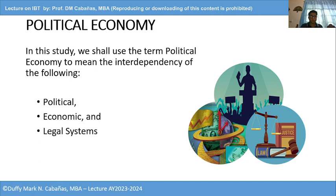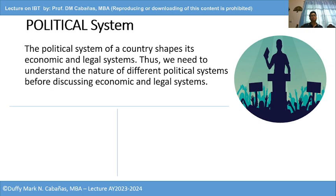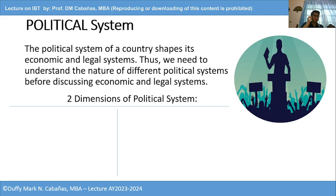They are all related, interdependent, and intertwined — you cannot take one out from the others. We call that political economy. Now, the political system of a country shapes its economic and legal systems, because they are the ones mandating, like what happened in Kenya when they changed their political system. That also shapes their economy and their legal system. Thus we need to understand the nature of different political systems before discussing economic and legal systems.